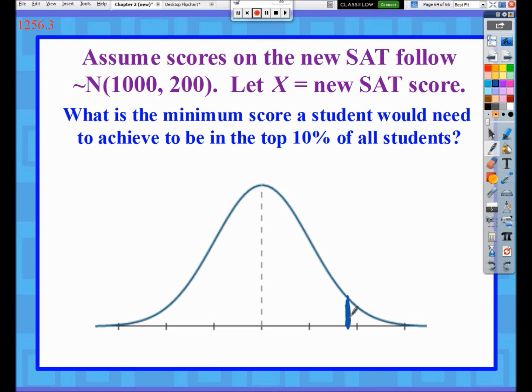I'm going to put an X right here. There's some score up here such that this region above X, this would be my top 10% of scores. So I'm just going to say there's where I would find 10%, my top 10%, with a mean still of 1000 and a standard deviation of 200.